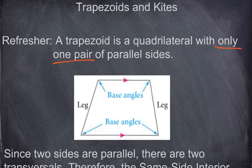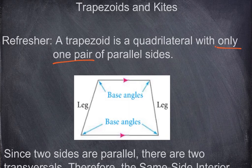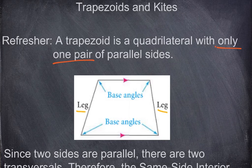Here's a diagram. The two sides that are not parallel, we call those legs — the legs of the trapezoid.